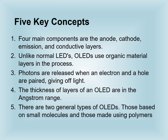As a conclusion, you should remember these five key concepts about OLEDs. First, the four main components are the anode, cathode, emission, and conductive layers. Second, unlike normal LEDs, OLEDs use organic material layers in the process. Third, photons are released when an electron and a hole are paired, giving off light. Fourth, the thickness of layers of an OLED are in the angstrom range. Fifth, there are two general types of OLEDs — those based on small molecules known as OLEDs, and those made using polymers known as PLEDs. Thank you all for listening.